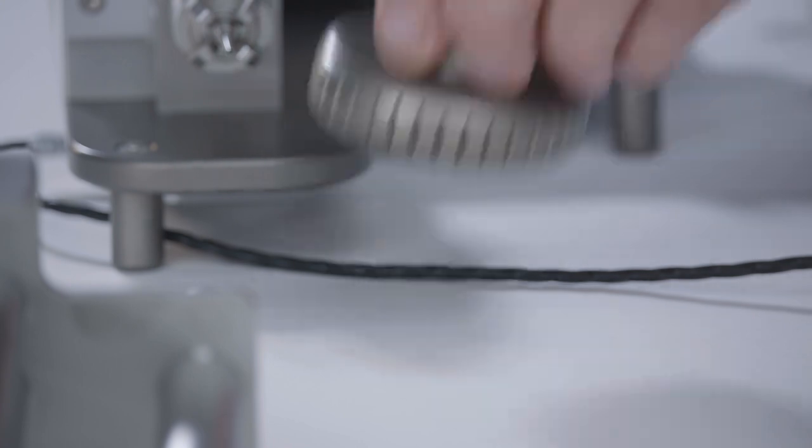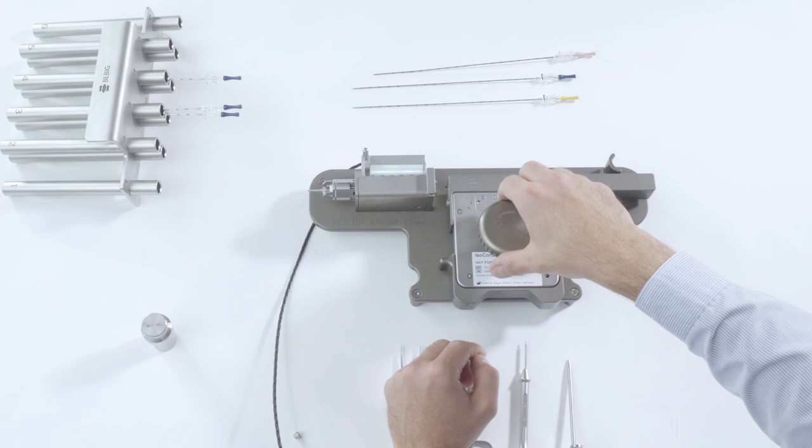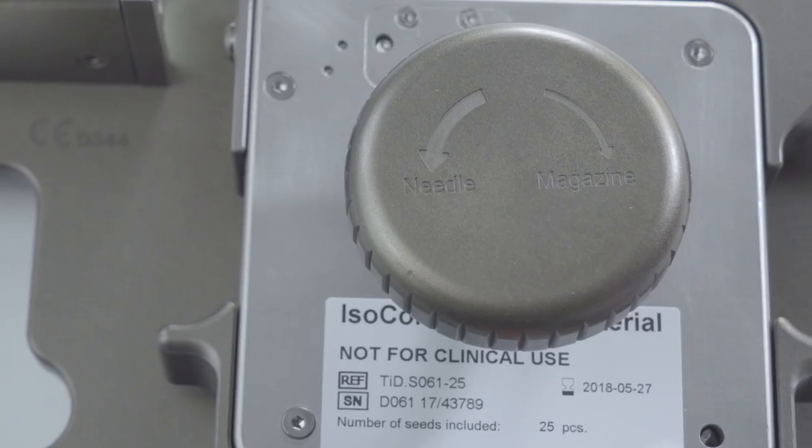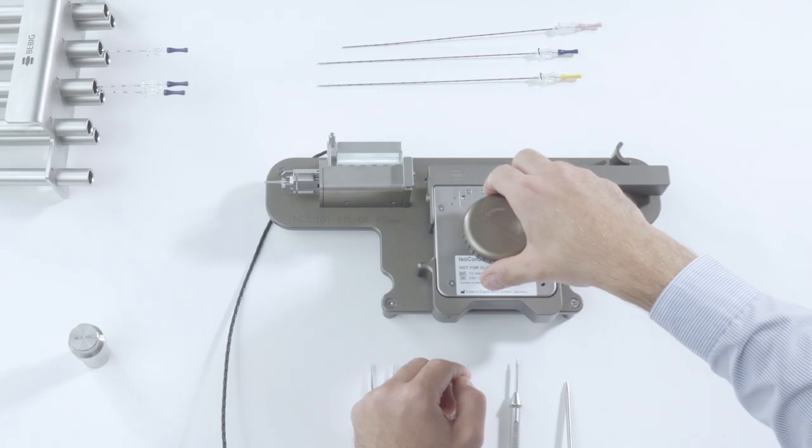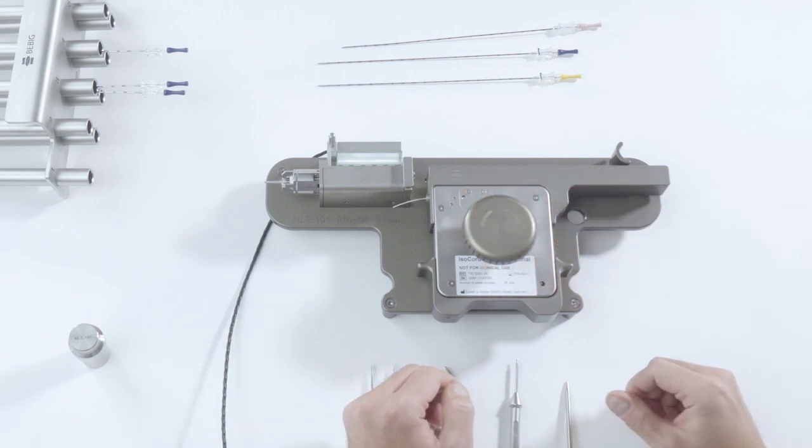To test whether the seed chain can move, insert the knob into the magazine and carefully turn the knob counter-clockwise in the direction marked needle. The knob should turn easily and the seed chain should protrude from the magazine holder.